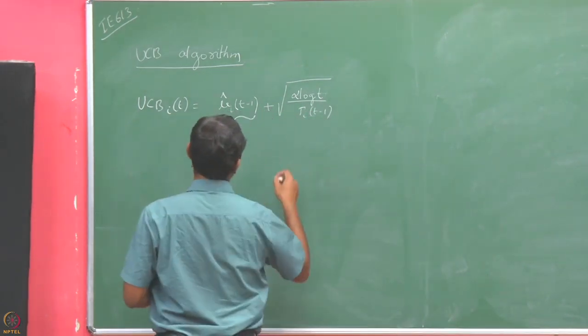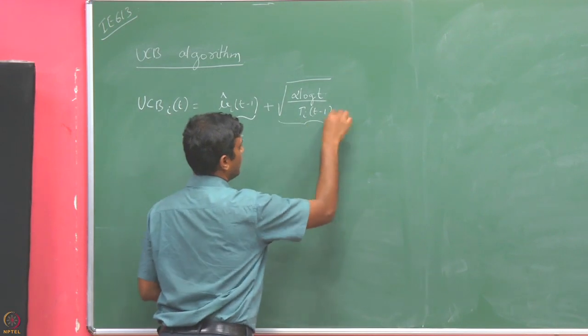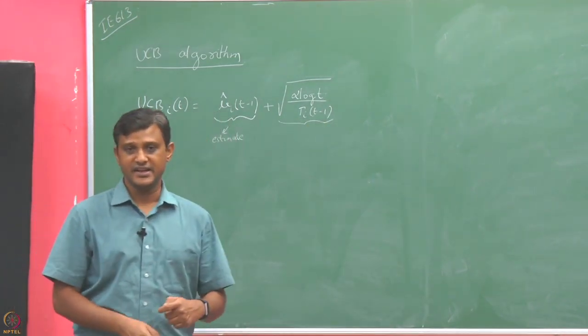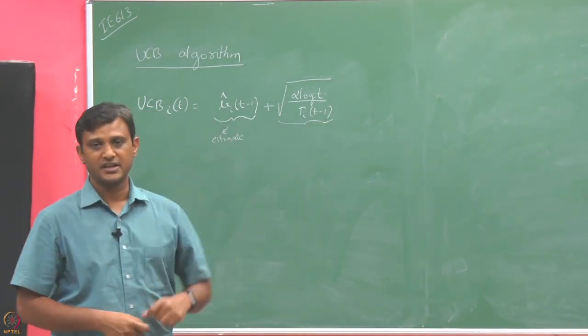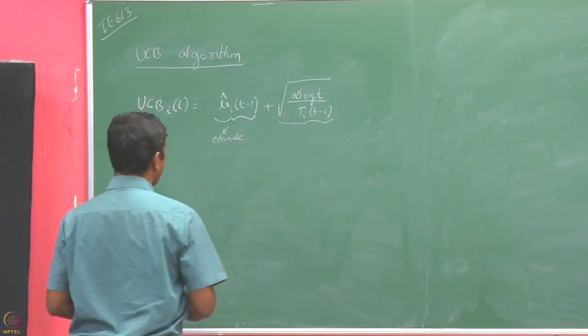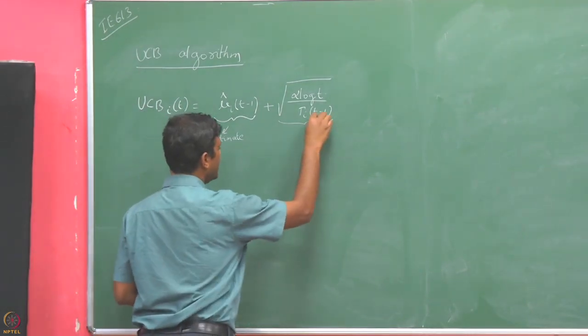The second part, alpha * log(t) / t_i(t-1), is the confidence term, which determines the confidence width of our estimates.